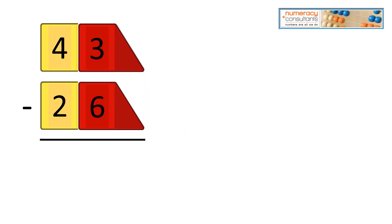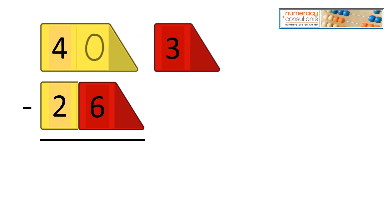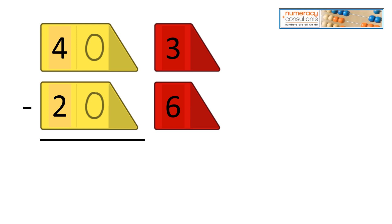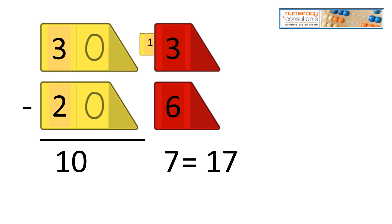This one's a little different because when we split, it's really hard to subtract 3 minus 6 — we can't do that. So we need to ungroup our tens. We have four tens, or 40, and we need to ungroup that. We slide a 10 over, and now we have 13. Our 40 becomes 30. Now we do 30 minus 20, which is 10, and 13 minus 6, which is 7. Our answer is 17.